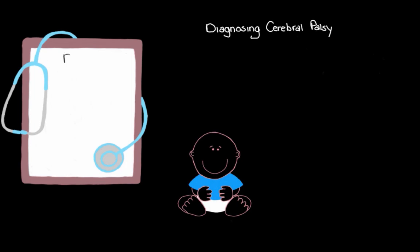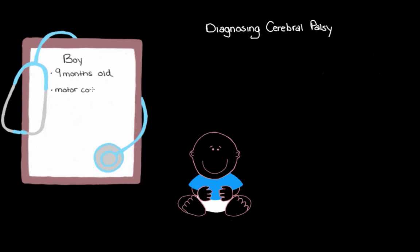Let's say this little boy is nine months old and has come in for a routine checkup. His parents express concern about his motor development — he doesn't seem to be able to roll over onto his side, sit upright without support, or grasp his toys very well. Each of these — rolling over, sitting without support, and grasping objects — are motor skills that a child should develop around a particular known age.